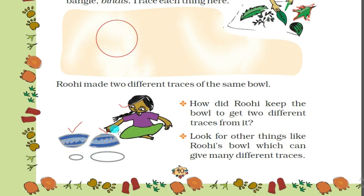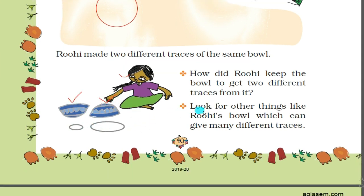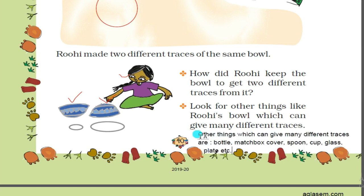Look for other things like Ruhi's bowl which can give many different traces. The other things which can give many different traces are: bottle, matchbox cover, spoon, cup, glass, plate, etc.